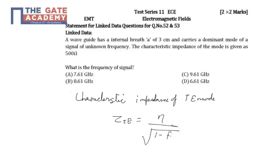Now 1 minus f naught upon f whole square - we have calculated f naught as 5, so 5 upon f whole square.